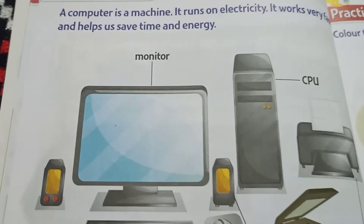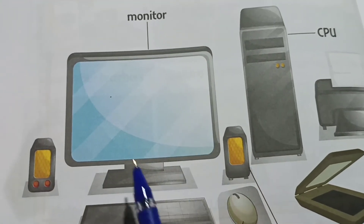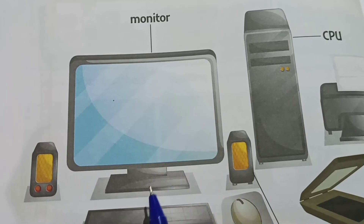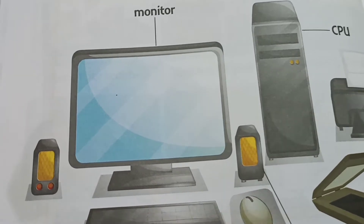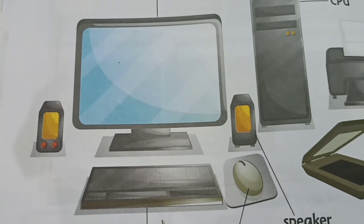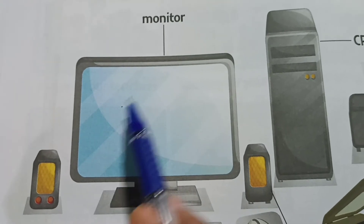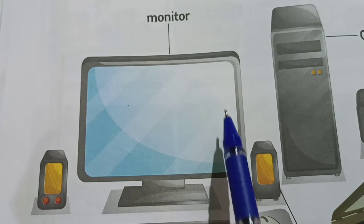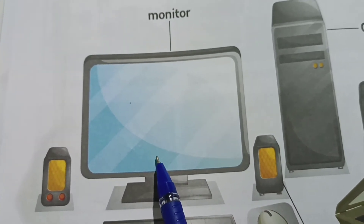Now you can see a computer. How does the computer look? It looks like a television. It has a screen like a television. And if you type something on the keyboard, the words and the sentence appear on the screen. Even if you do a drawing, you can see the drawing on the screen. So this is a monitor.